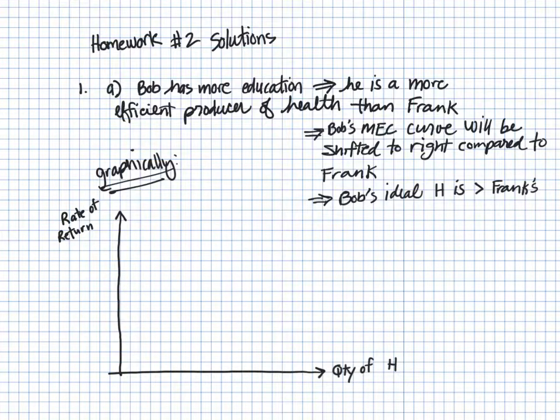This question hinges on the fact that Bob has more education than Frank, so that means that he is a more efficient producer of health than Frank. The implication graphically is that Bob's MEC curve, the marginal efficiency of capital curve, will be shifted to the right compared to Frank.